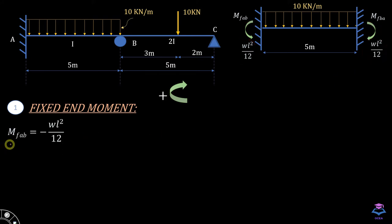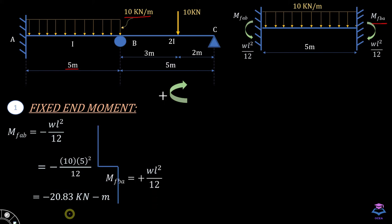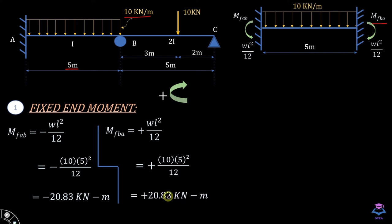MFAB is equal to minus WL²/12. The negative sign indicates that this moment is acting in the anti-clockwise direction. In the Moment Distribution Method, clockwise moment is taken as positive. Here W is the intensity of the UDL and 5 is the span length, giving MFAB equal to minus 20.83 kN·m. MFBA is equal to positive WL²/12, which comes out to be positive 20.83 kN·m.